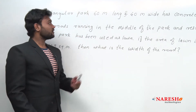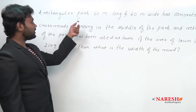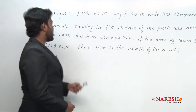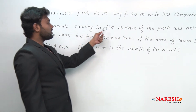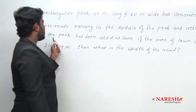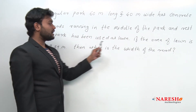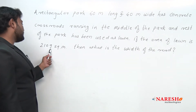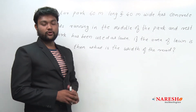Now I am reading the question. The question is: a rectangular park 60 meter long and 40 meter wide has concrete crossroads running in the middle of the park and the rest of the park has been used as lawn. If the area of lawn is 2109 square meter, then what is the width of the road?